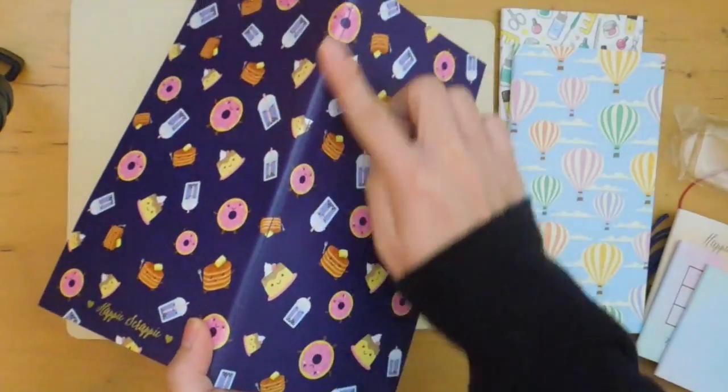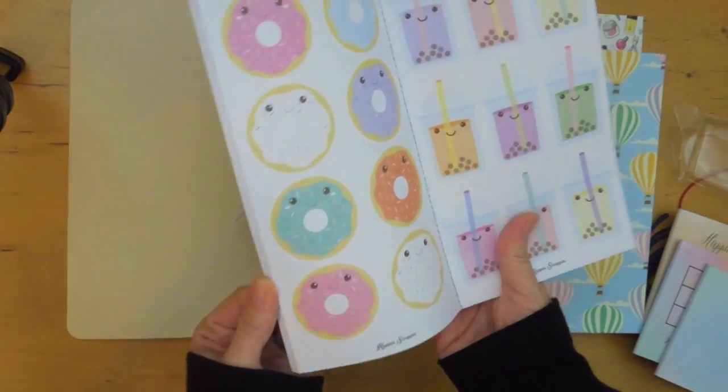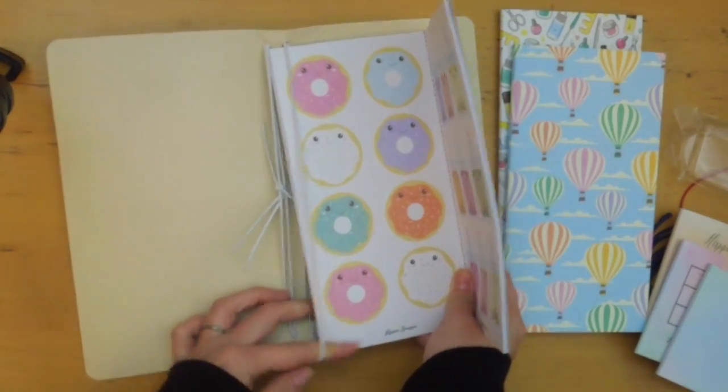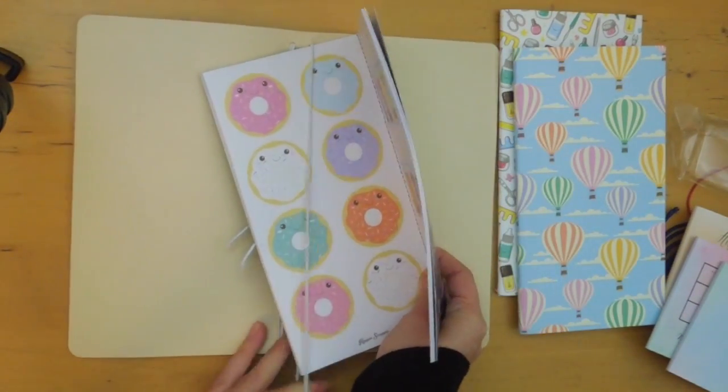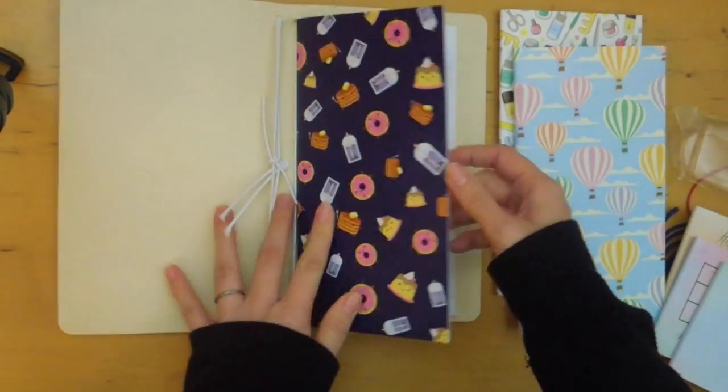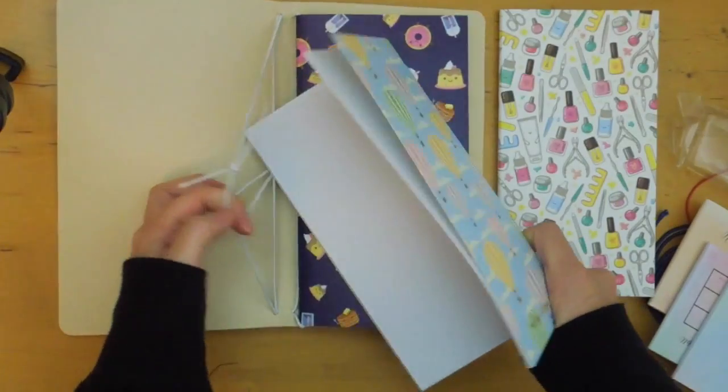And these inserts I forgot to mention, it looks like they're stitched, which is really nice. So you don't have to worry about the staples coming undone or anything. But I'm just gonna quickly show you what it looks like with these three notebooks inside. I'm just gonna put them in just random order.